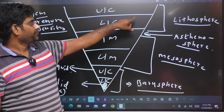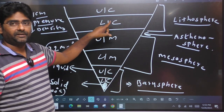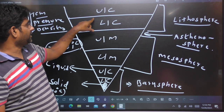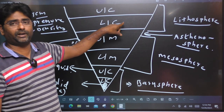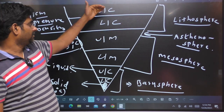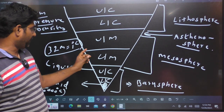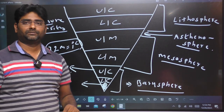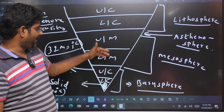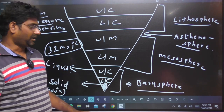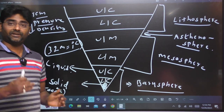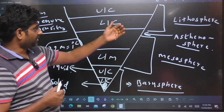Here is Conrad Discontinuity. Here is Moho Discontinuity. Conrad Discontinuity is upper crust and lower crust. Moho Discontinuity is upper crust and lower mantle. Repetti separates upper mantle and lower mantle. Gutenberg separates mantle and core. Lehmann separates upper core and lower core. Number 5 — this is serial.